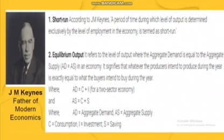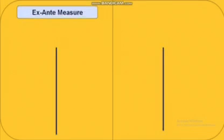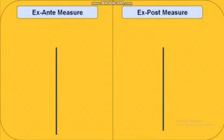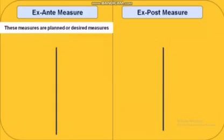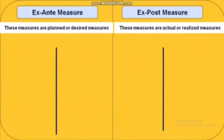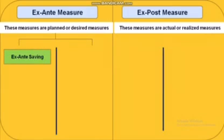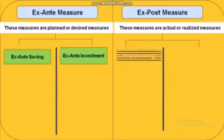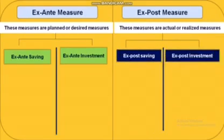C stands for consumption, I for investment, and S for saving. Now we come to ex-ante and ex-post measures. Ex-ante measures are planned or desired measures — whatever we plan or desire to do. Ex-post means the actual outcome. Ex-ante has two types: ex-ante saving and ex-ante investment. Similarly, ex-post also has two types: ex-post saving and ex-post investment.